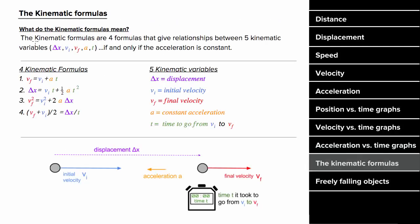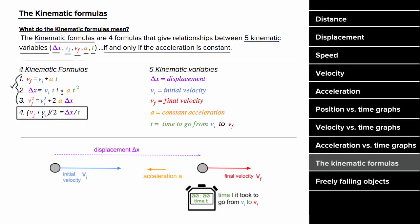What are the kinematic formulas? The kinematic formulas relate the five kinematic variables: displacement, initial velocity, final velocity, acceleration, and time. These formulas only give true relationships if the acceleration is constant. Three kinematic formulas are given on the AP test, but the fourth one is not. One way to remember it is that the left-hand side is (v_final + v_initial) / 2, which is the average of the velocities, and the right-hand side is displacement per time — the definition of average velocity. So it states that the average of the velocities equals the average velocity.